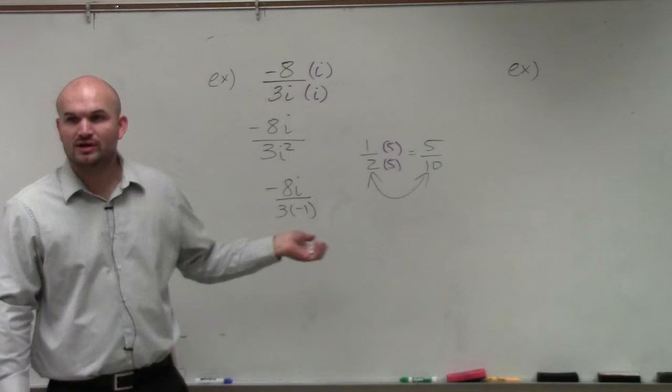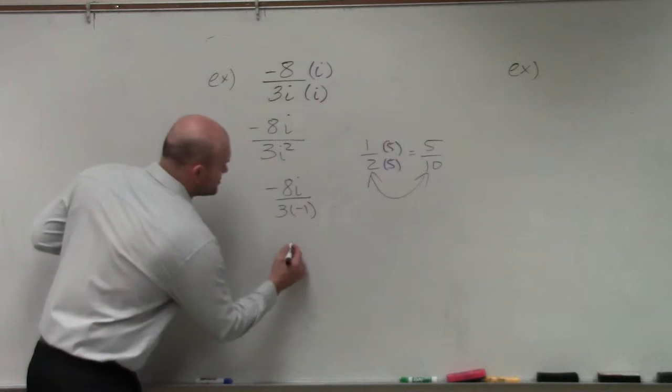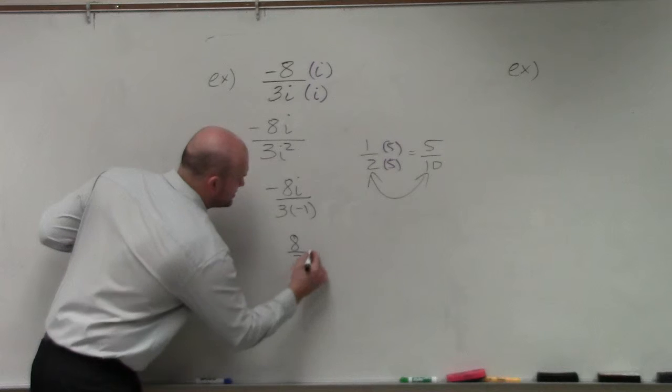Well, 3 times negative 1 is negative 3. The negatives are going to divide out, so I'm going to be left with 8 thirds i.